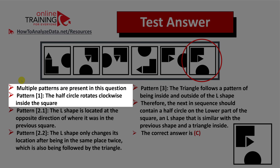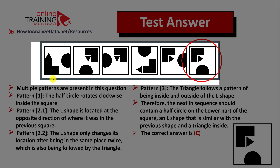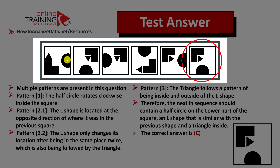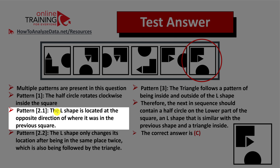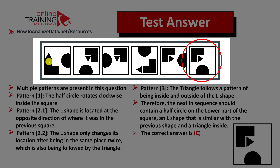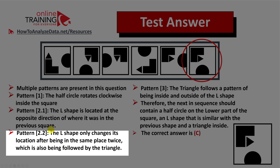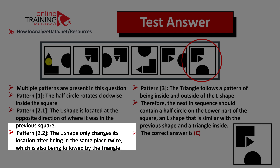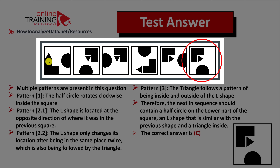There are multiple patterns present because this is the type of question you get on the test. The first pattern is where a half circle rotates clockwise inside the square — the first position is on the right, next at the bottom, then left, top, and then the cycle repeats. The second pattern is where the L-shape is located at the opposite direction of where it was in the previous square — so the L-shape in the first square is in the bottom left, and in the next square it's in the upper right corner. The third pattern, also related to the L-shape, is that it only changes its location after being in the same place twice — the L-shape is in the bottom left in square one, then upper right in squares two and three, then changes to bottom right, followed by upper left and upper left again.